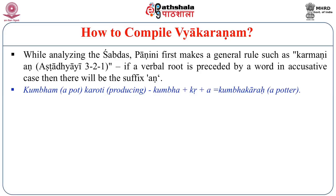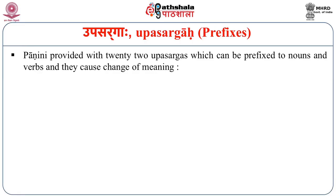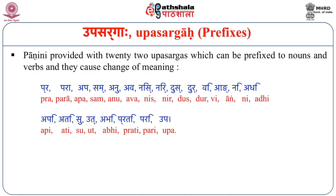Where An is not applicable, Panini makes an exceptional rule: if the verbal root ends in A and is not prefixed with an Upasarga such as Pra, Para, etc., the suffix Ka is used in the same context; example: Gam dadati (one who donates a cow) is called Gaodaha. Panini provided 22 Upasargas — prefixes that can be added to nouns and verbs as they cause change of meaning: Pra, Para, Apa, Sam, Anu, Ava, Nis, Nid, Ud, Sud, Dur, Vi, Ang, Ni, Adhi, Api, Prati, Pari, Upa, Su, Utu, Abhi.